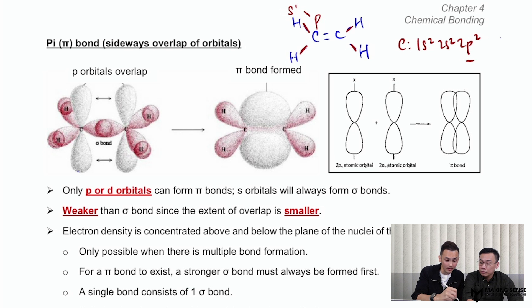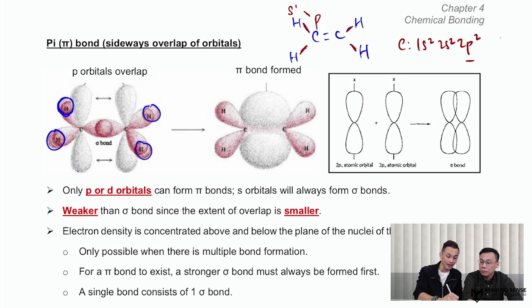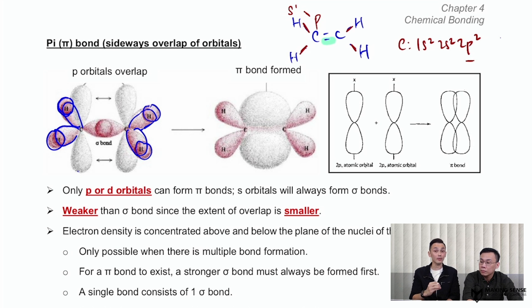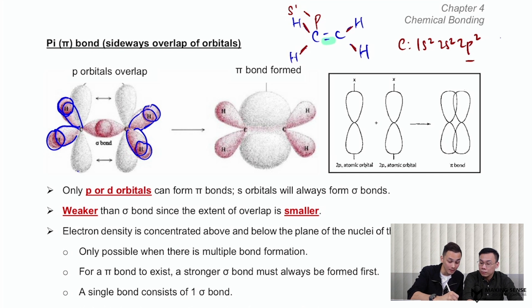This is replicated four times across all the C-H bonds. In the diagram, the spherical shape represents the s orbital of hydrogen, and the dumbbell shape represents the p orbital — showing the sp-sigma overlap between carbon and hydrogen. Now, if you look at the carbon-carbon bond, there are two bonds. The first one is also a sigma bond: a p-p-sigma overlap.